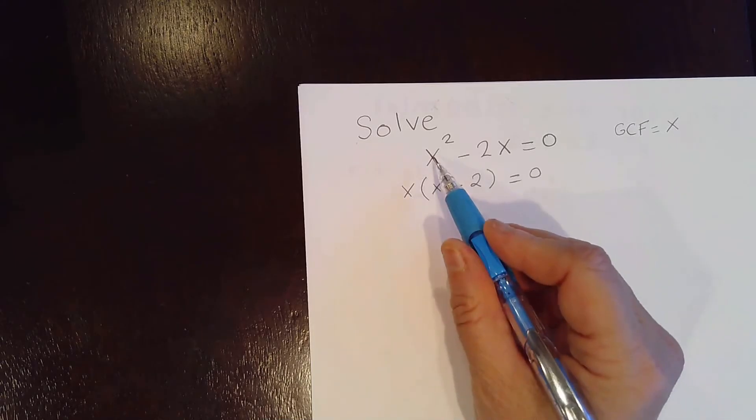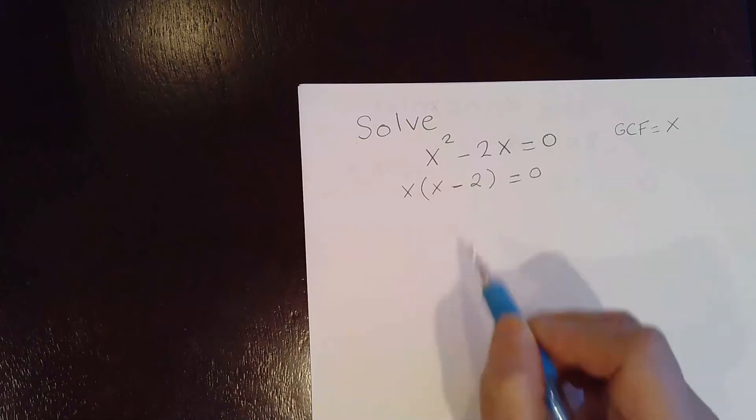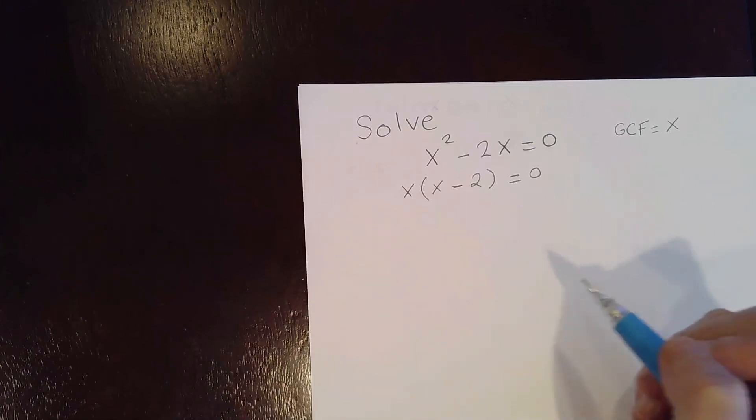x times x gives you x squared. x times negative 2 is negative 2x. So this is the correct factoring. Now that I've factored the left side of the equation, I can use the 0 product property.